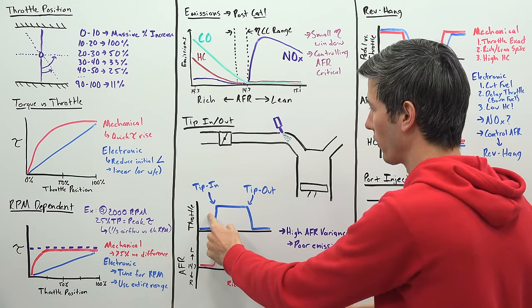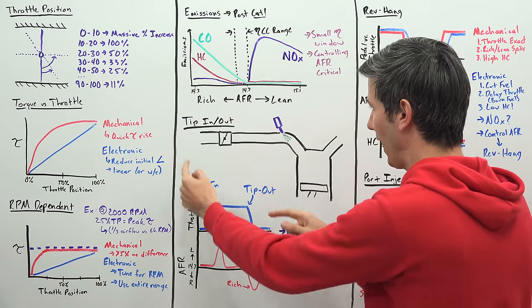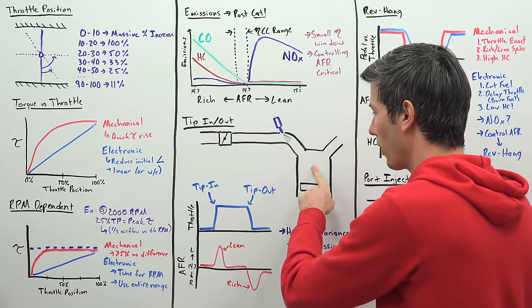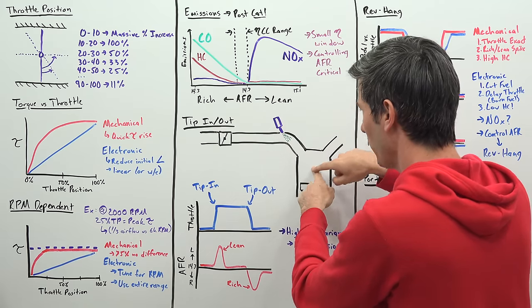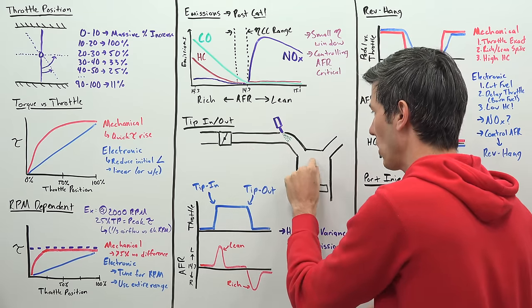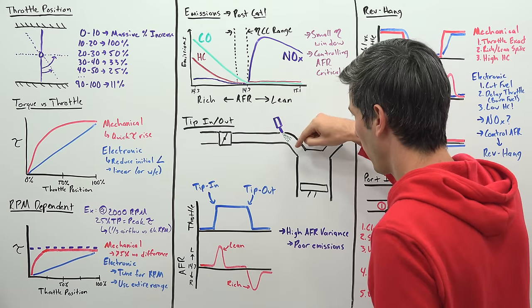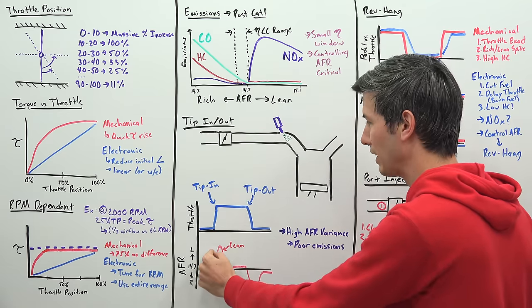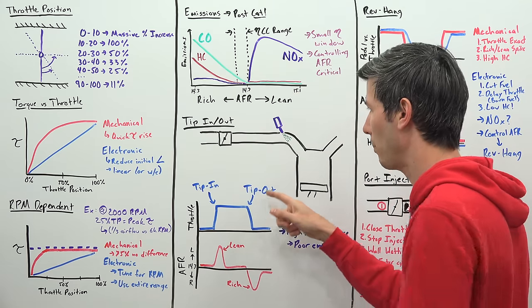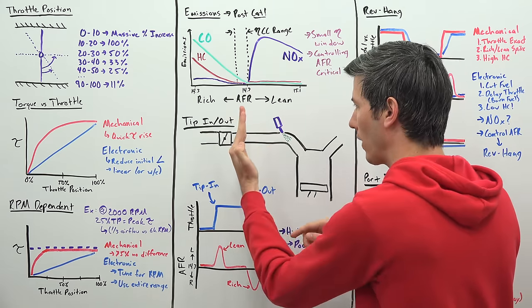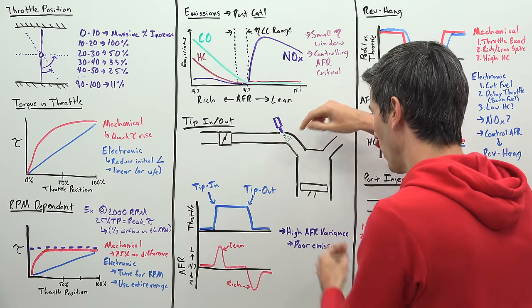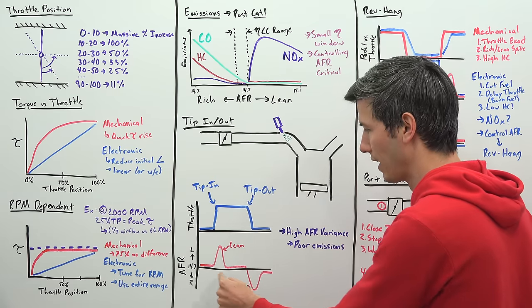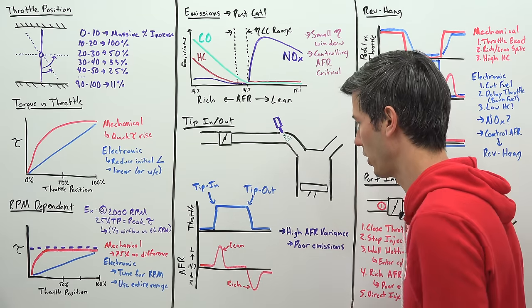So with tip in, your throttle valve is closed and then you open it. And as you open it, you have a rush of air go in that engine. And depending on the engine's ability to time that fuel injection, initially, you're going to have a lot of air in that cylinder and not enough fuel to make up for it. So you'll see a lean spike. And then with tip out, what you'll do is you'll close that throttle valve, shutting off the air, but you're still injecting fuel. And so now you have a rich air fuel spike in the air fuel ratio.